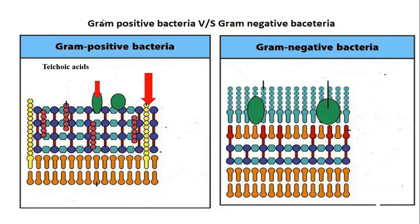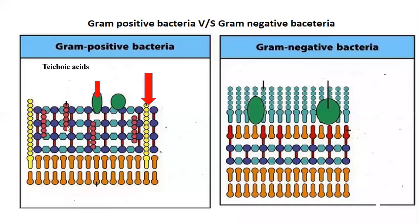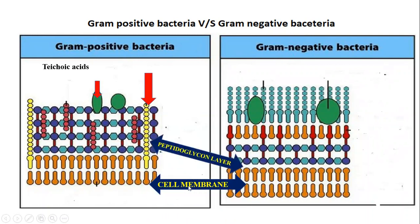Next, we'll discuss the differences between gram positive and gram negative bacteria. Both gram positive and gram negative bacteria have a cell membrane, and both also have a peptidoglycan layer.